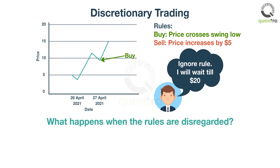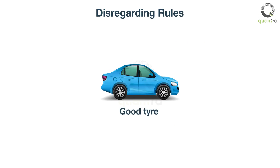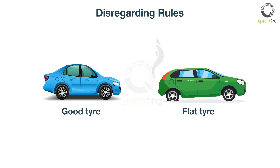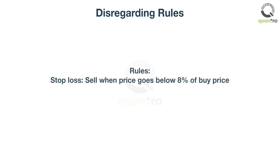What happens when the rules are disregarded? As a rule while driving a car, your tires should have an optimum level of air. Sure, you can drive a car with a flat tire, but imagine the damage it will cause. In a similar manner, consider a discretionary swing trader who has defined rules to exit if there is a loss of 8%, and not otherwise.